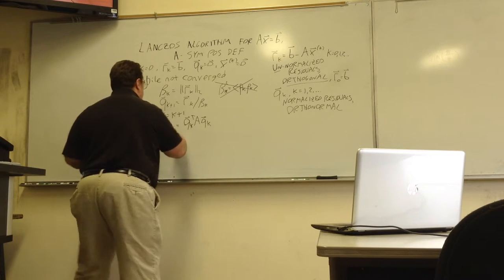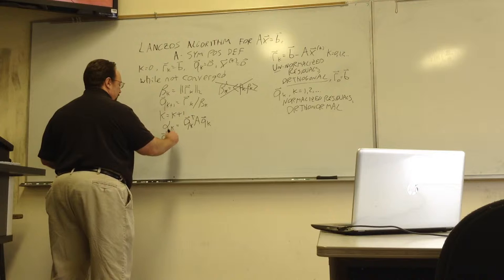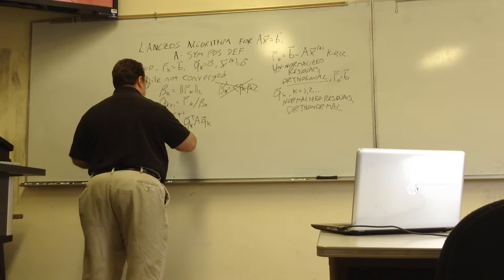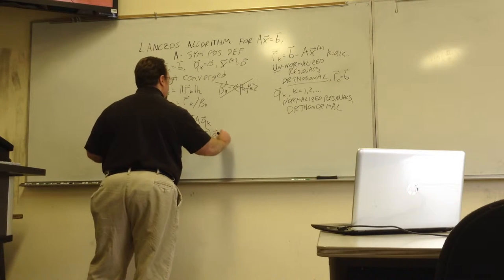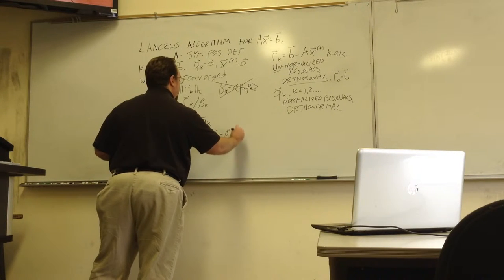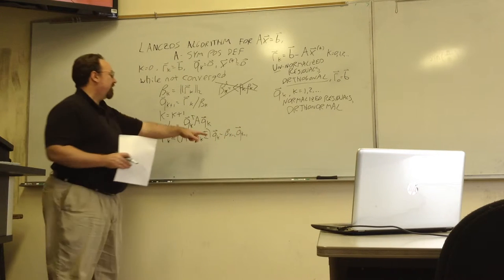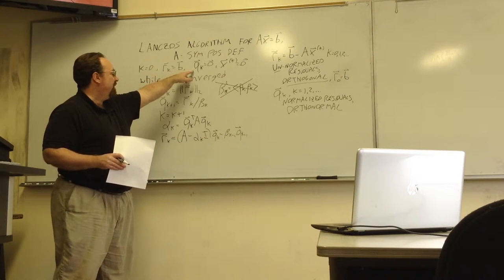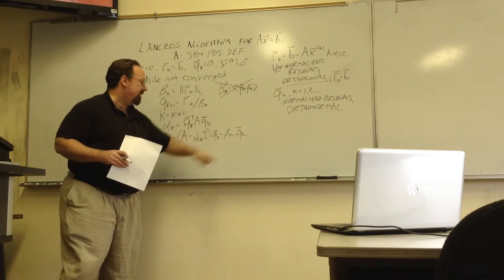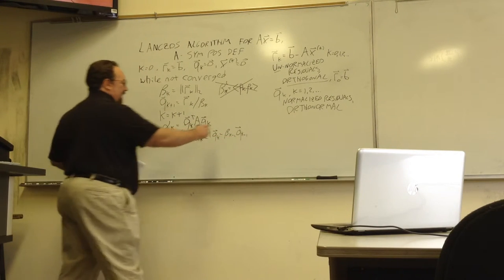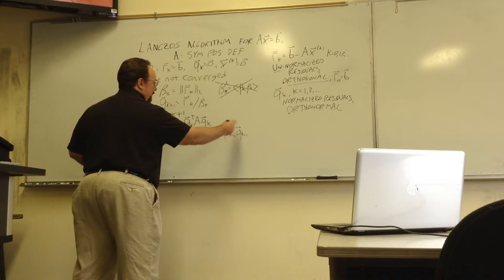Our next unnormalized residual is A minus alpha K I QK minus beta K minus 1 QK minus 1. And this is why I say Q0 is 0. So that way, even when K is equal to 1, this is still valid. We could just not have a term, but the term we have here is 0.